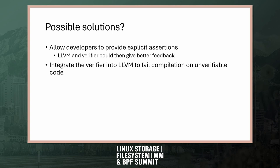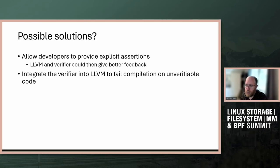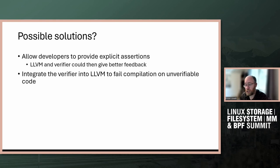One of the possible options we have for improving verification failures is to allow developers to write explicit assertions within the code — certain things that they believe should be true — that LLVM and the verifier could check against their internal state and provide much more immediate feedback to the developer saying: this is why verification is failing, because this assertion you made is not true.